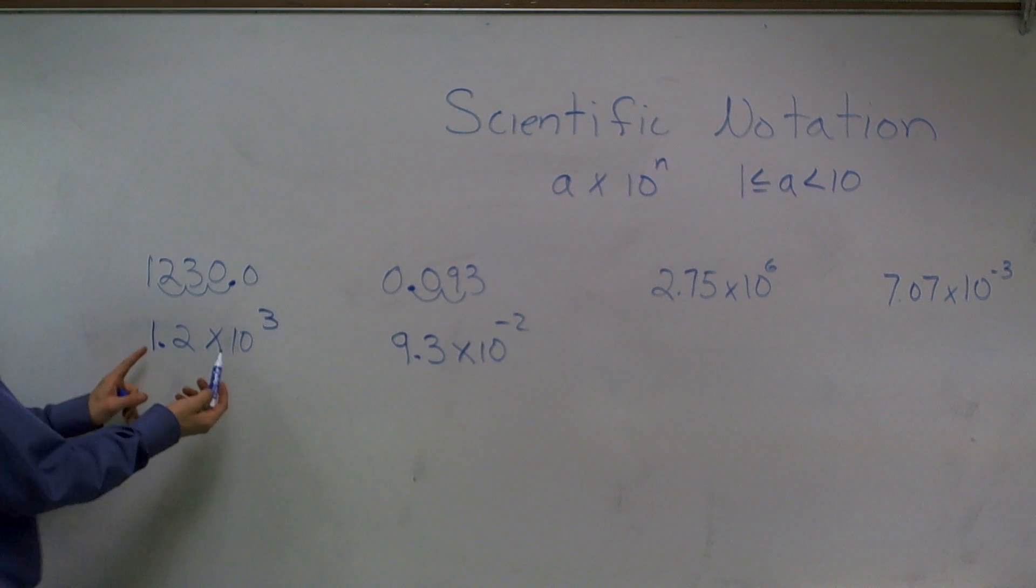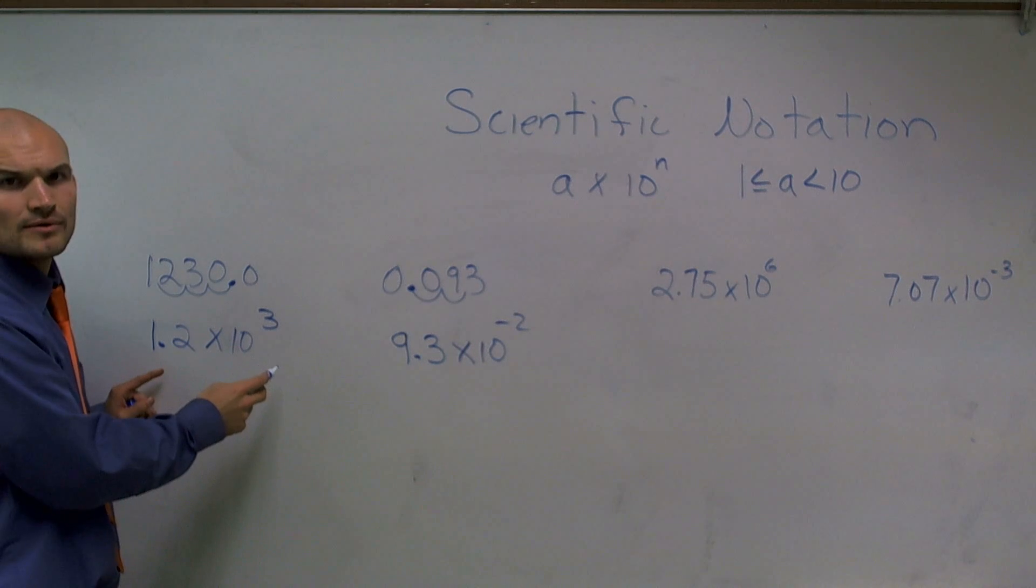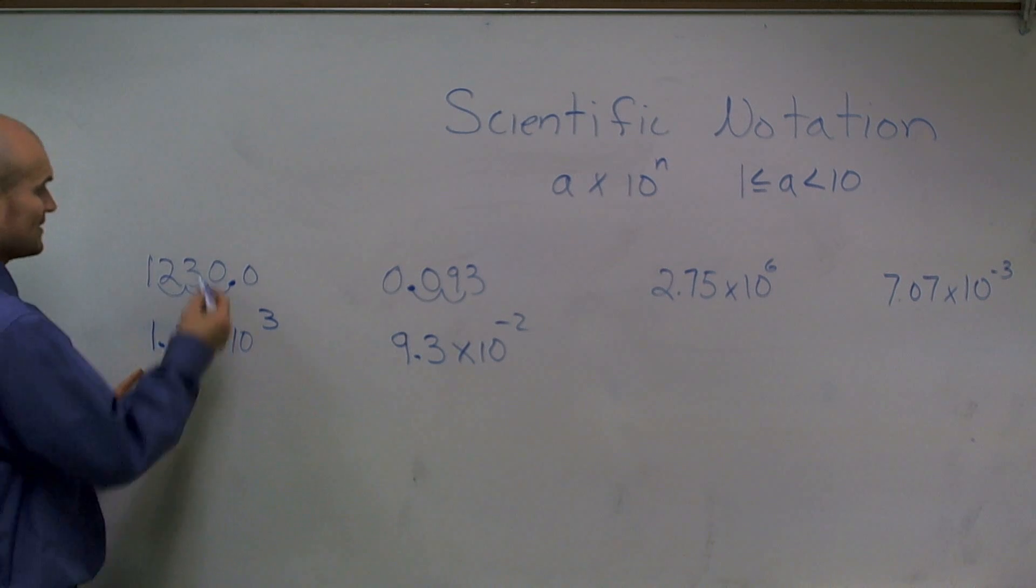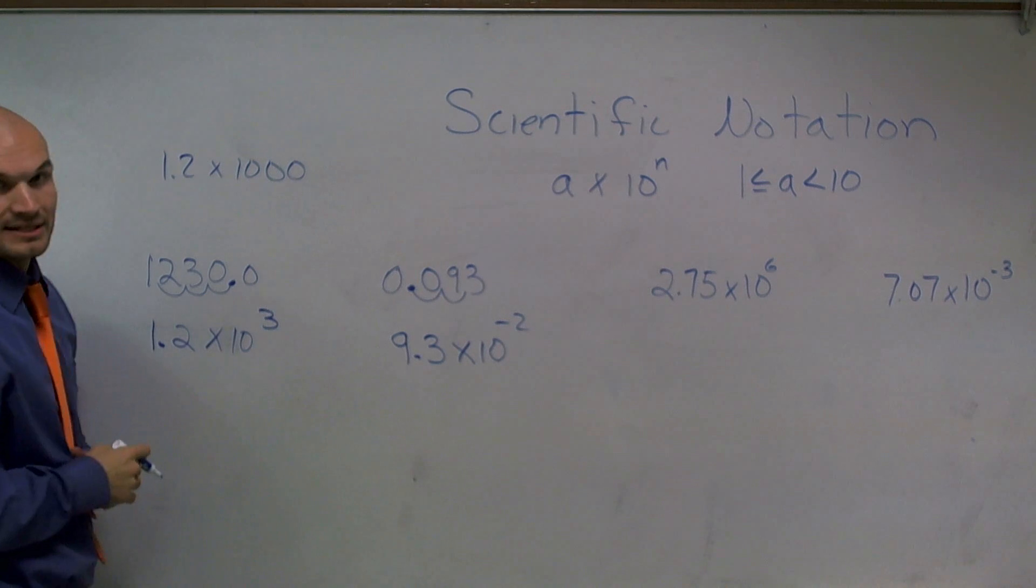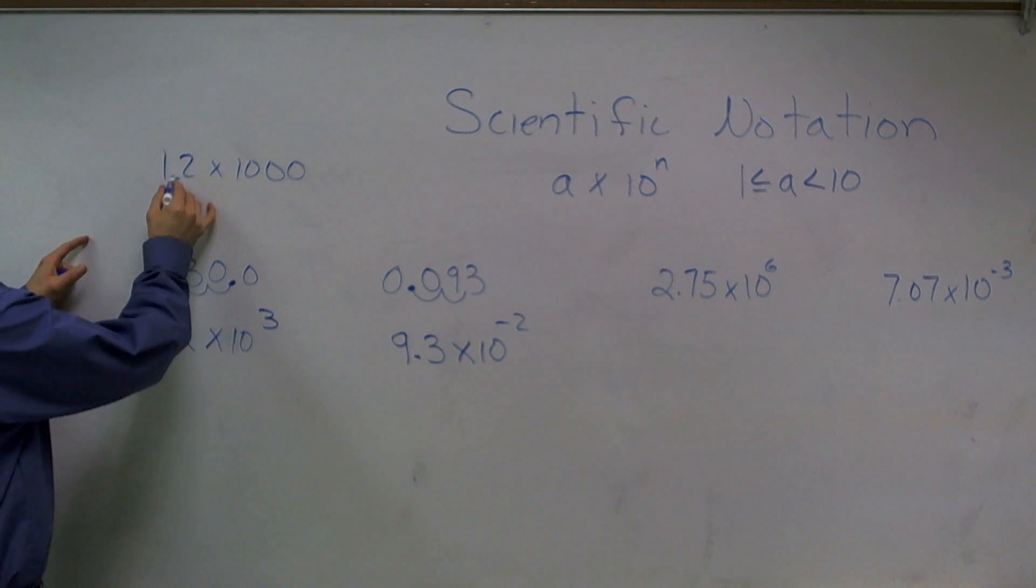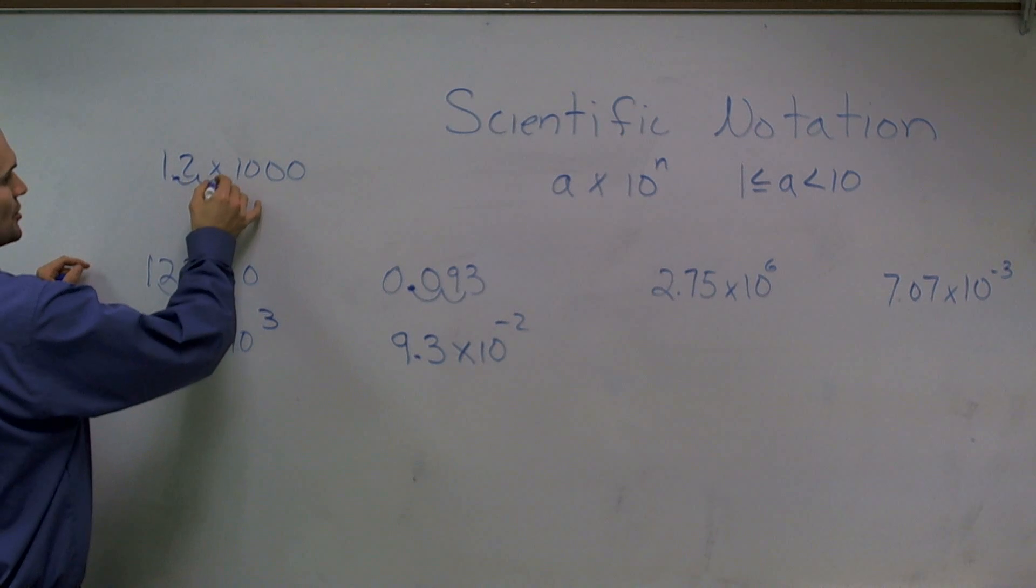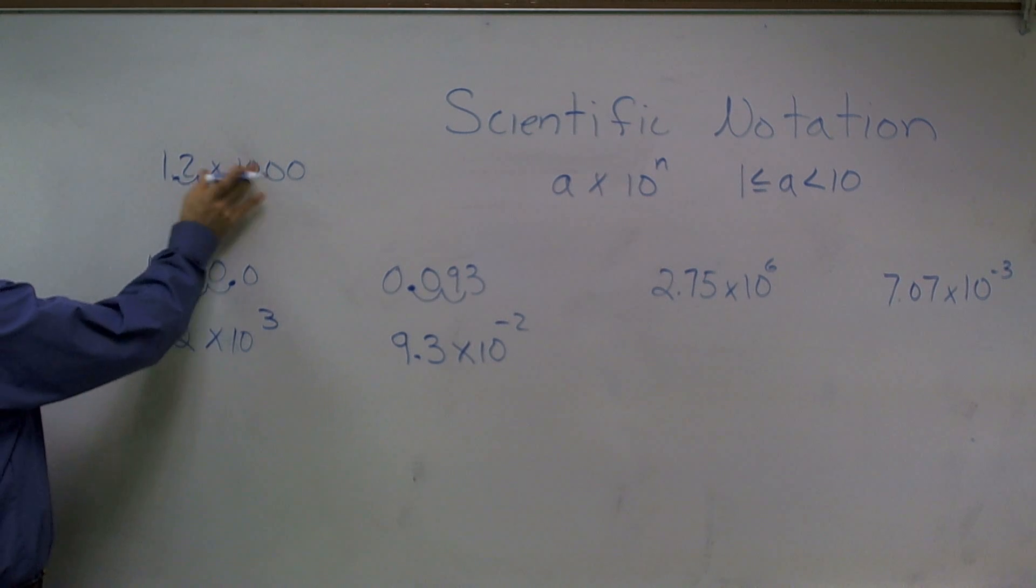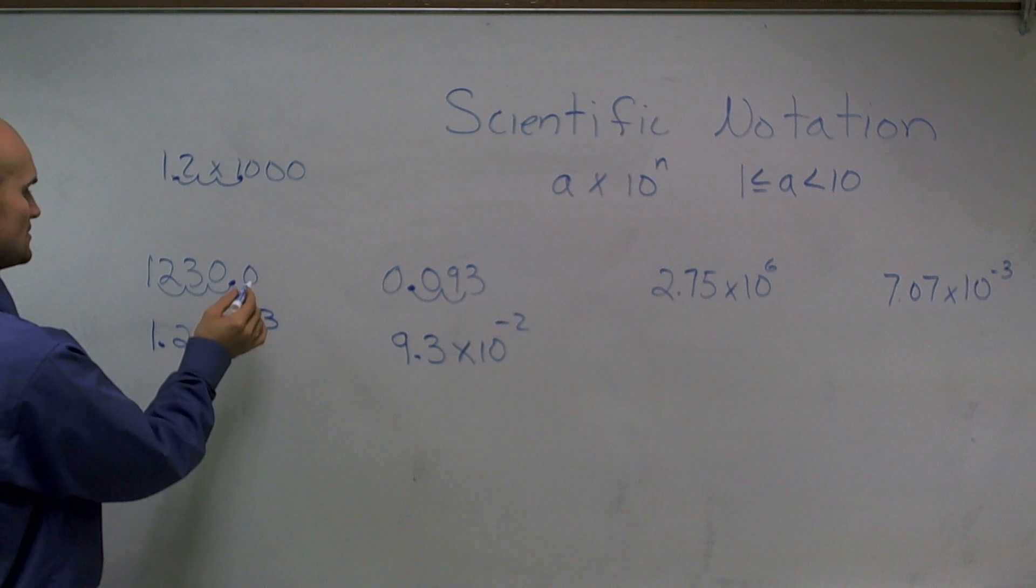So make sure, because if you think about this, 10 to the third power is what value? Well, that would be 10 times 10, which is 100, times another 10, which would be 1,000. Well, 1.23 times 1,000 is going to add your zeros over there. So 1, 2, 3. So that's where it's going to move your exponent.